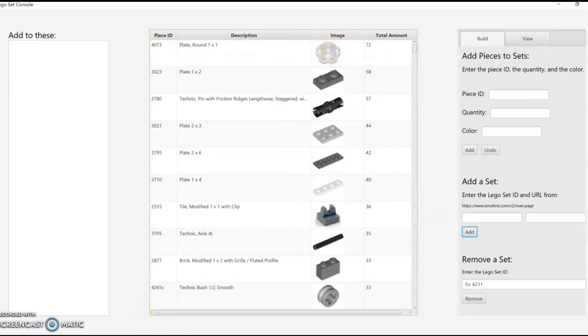So, my brothers and I have to find pieces of the same type in the bins and enter the quantity and color that we found. The application will then tell us which sets need those pieces. Here is a demo of the application.